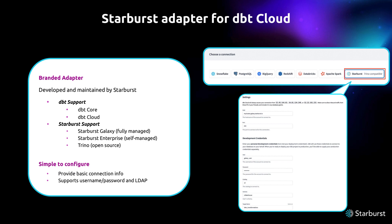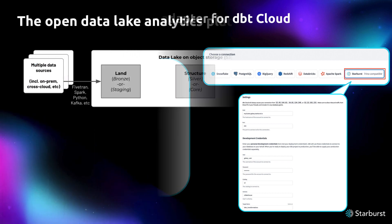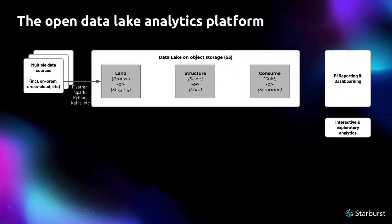The Starburst adapter for dbt is now available for dbt cloud as well as dbt core, and supports Starburst Galaxy, Starburst Enterprise, and Trino clusters. With just a few clicks, you'll be able to combine and transform all of your data through one single dbt repository. Many users see that Starburst allows you to federate multiple data sources so that you can incorporate data outside of a single dbt repository. Others utilize Starburst and dbt together to build out an open data lake architecture, which is what we want to showcase in this demo.